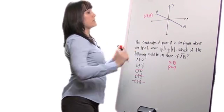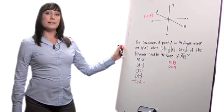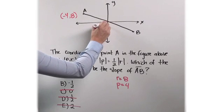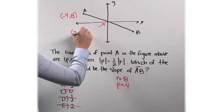And now I need to find the slope. I need a second point. But I can use this point right here, which would be 0, 0.